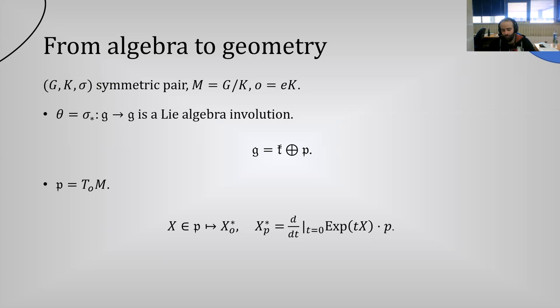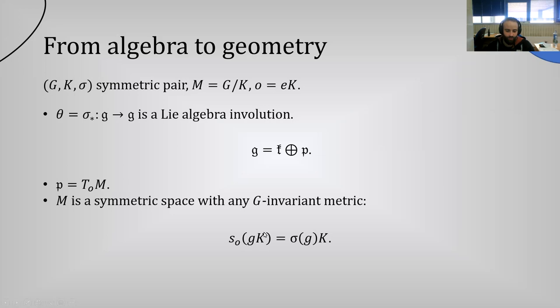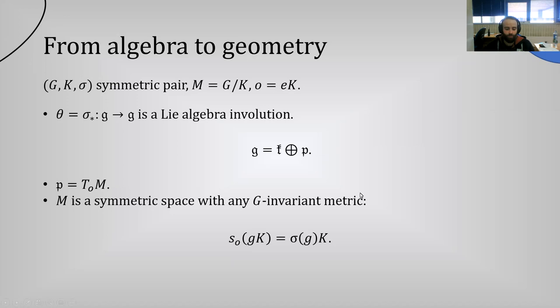So far we have a vector space decomposition on a homogeneous space, but we don't yet know if M is a Riemannian manifold or a symmetric space. It turns out that as long as we put a G-invariant metric on M — and such metrics exist because of the compactness of K — M is always going to be a symmetric space. We can define the geodesic symmetry at the origin by the map taking the coset gK to sigma(g)K. This is a diffeomorphism and an involution, and its differential at the tangent space p is minus the identity, confirming it is an isometry. By translating, this gives a global isometry.